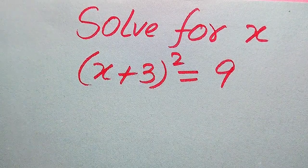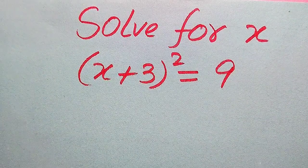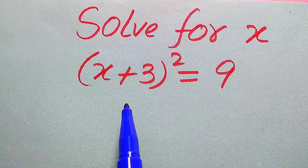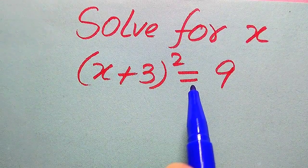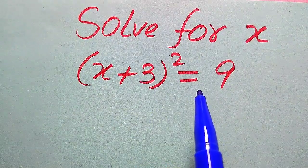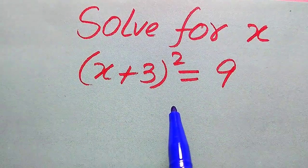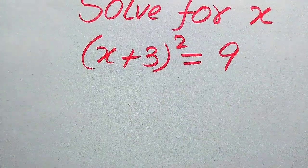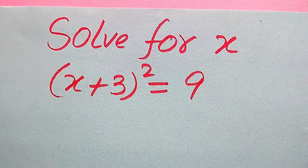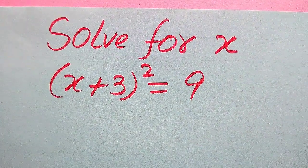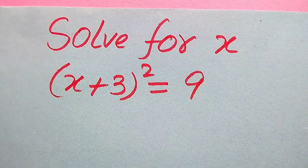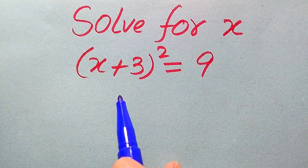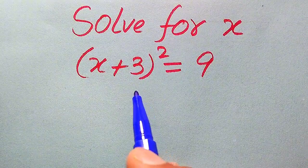Hello everyone. How to solve this problem for the values of x if we have (x + 3)² = 9 and we solve this problem for all the values of x. Here first we need to find all the roots of this equation, and at the last we will verify which of the roots are solutions or which of the roots are extraneous roots.